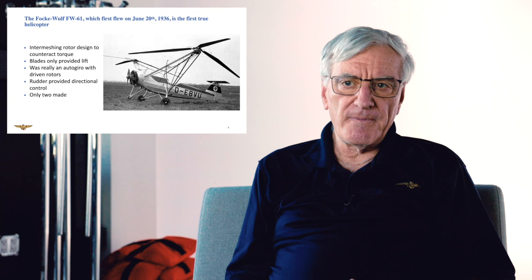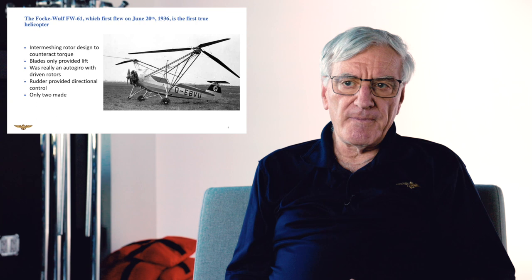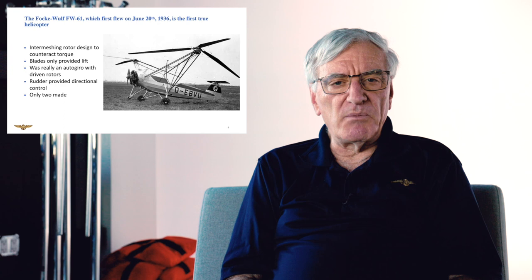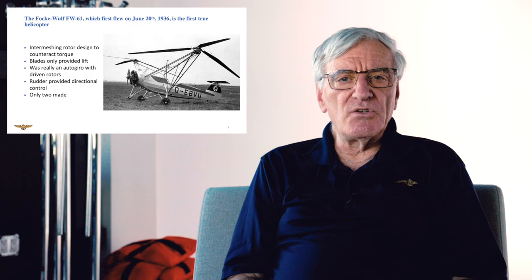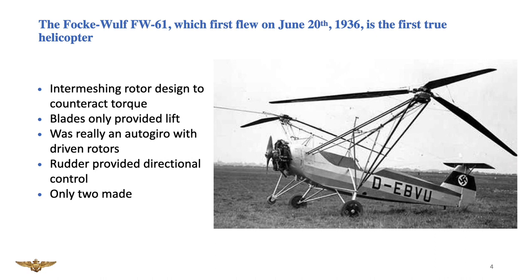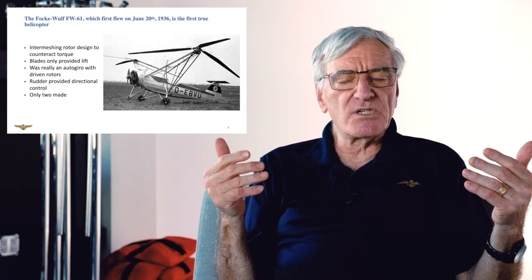The first practical helicopter, or the first helicopter that we know today, was built by Fockewulf in 1936. This is in the days of Nazi Germany, and they actually built two of them. As you can see in this picture, you have rotors on each side, and they were positioned there to counteract torque. The way this helicopter was controlled was through the rudder at the back and an elevator. It really wasn't a helicopter as we know it today, and they only built two of them.